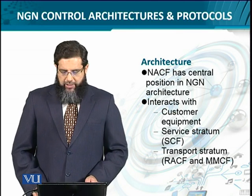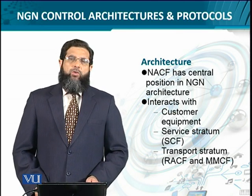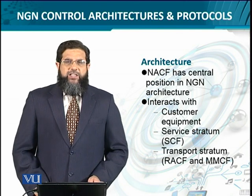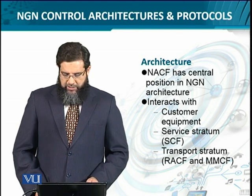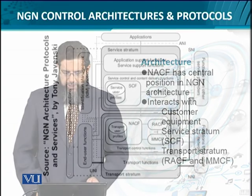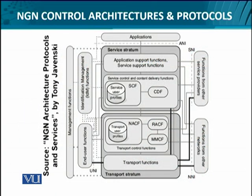The network access and control function has a central position in the overall architecture. It interacts with applications, the customer, the services stratum, the transport stratum including the radio, the resource and admission control function, and the mobility management control function. As seen in the figure, the transport stratum contains transport functions and transport control functions, with the transport control functions comprising resource and admission control, mobility management, and the network and access control functions.